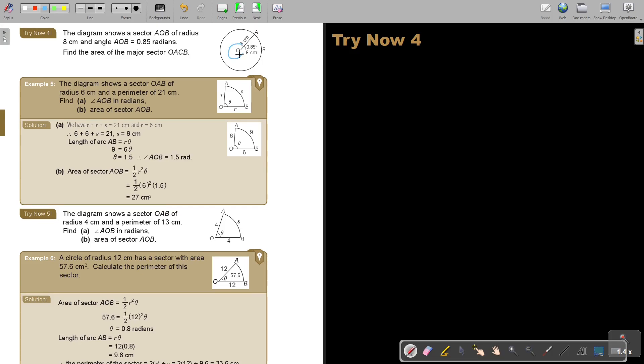So we will start by saying, first I will find the angle of the major sector. And that will be 2π minus 0.85, and that will be 5.433185307 radians.